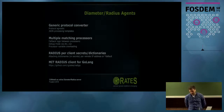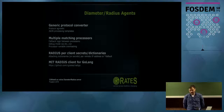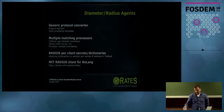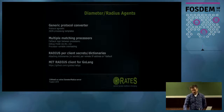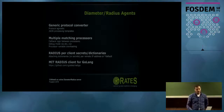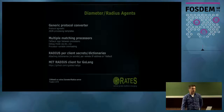Regarding Diameter and Radius agents: we have a generic protocol converter that is protocol-agnostic and you can define all its logic in JSON processing templates. You can have multiple matching processors running at the same time, with fallback between them, template debugging, and processor variable overloading. For Radius you can define per-client secrets or dictionaries. We built our own Radius library in Go — called Radigo — and we encourage you to use it.